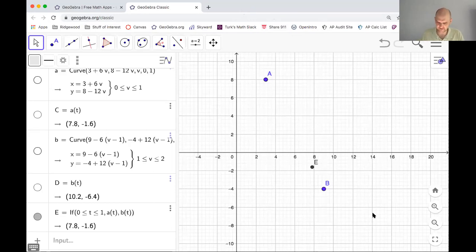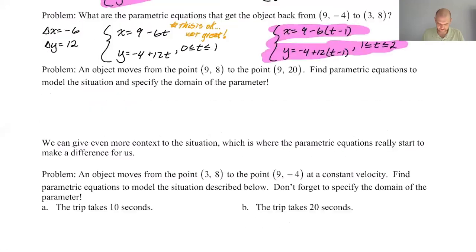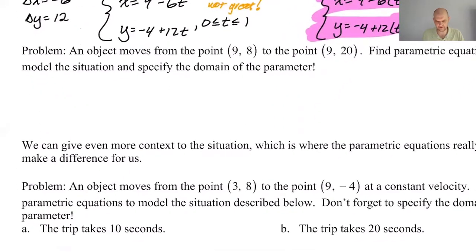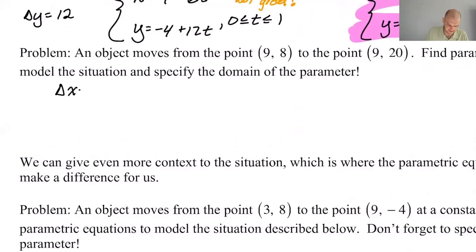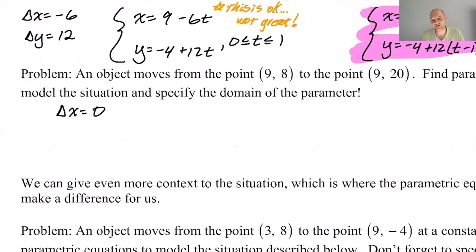Let's just do it. So we're going to go from (9, 8) to (9, 20). So think about your delta X there. Delta X is 9 minus 9. It's 0. X isn't changing. So do you have to write plus 0T? Not really. I think it's actually a good idea. I'm a big fan of making things look like the form that you expect them to look like. But it's up to you. And then 8. So I need to add 12. So delta Y is 12.